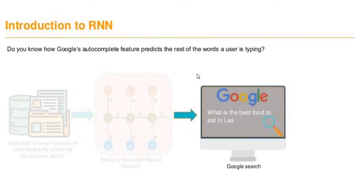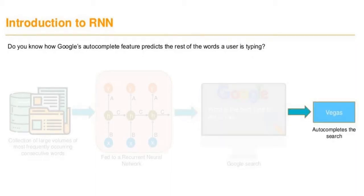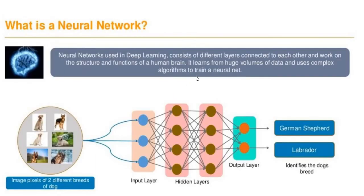For example, if I am trying to search on the Google search engine 'what is the best food to eat in Las Vegas,' the autocomplete feature is going to predict 'Vegas.' We often see these things happening when we type something into Google search, but we don't put much emphasis on how Google is thinking about it. It autocompletes the search based on whatever past historical records or datasets are available.